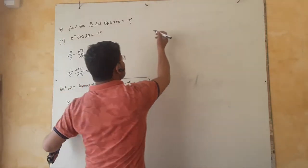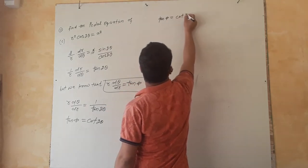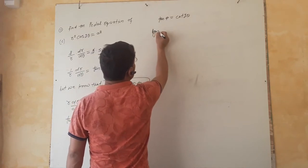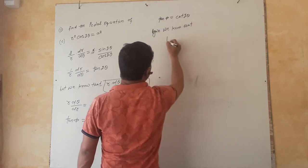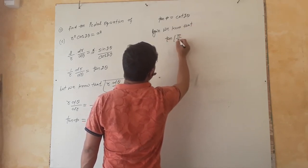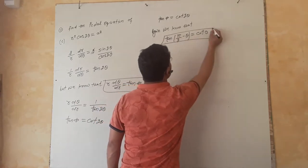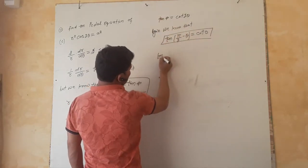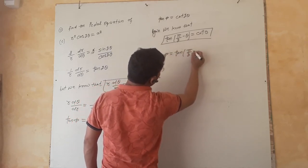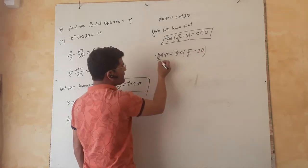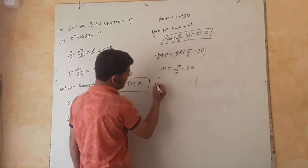Now tan φ equals cot 2θ. We know that tan(π/2 − θ) = cot θ. Using this identity, tan φ = tan(π/2 − 2θ), so φ equals π/2 minus 2θ.